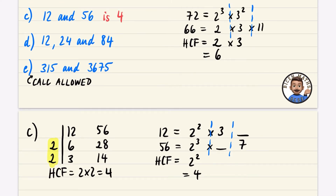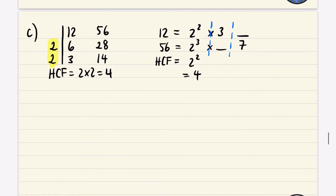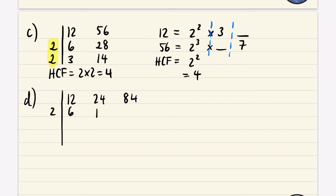For part d, we've got 12, 24, and 84. Using the table method, they can all be halved. Dividing by 2: 12 ÷ 2 = 6, 24 ÷ 2 = 12, and 84 ÷ 2 = 42. Dividing by 2 again: 6 ÷ 2 = 3, 12 ÷ 2 = 6, and 42 ÷ 2 = 21.